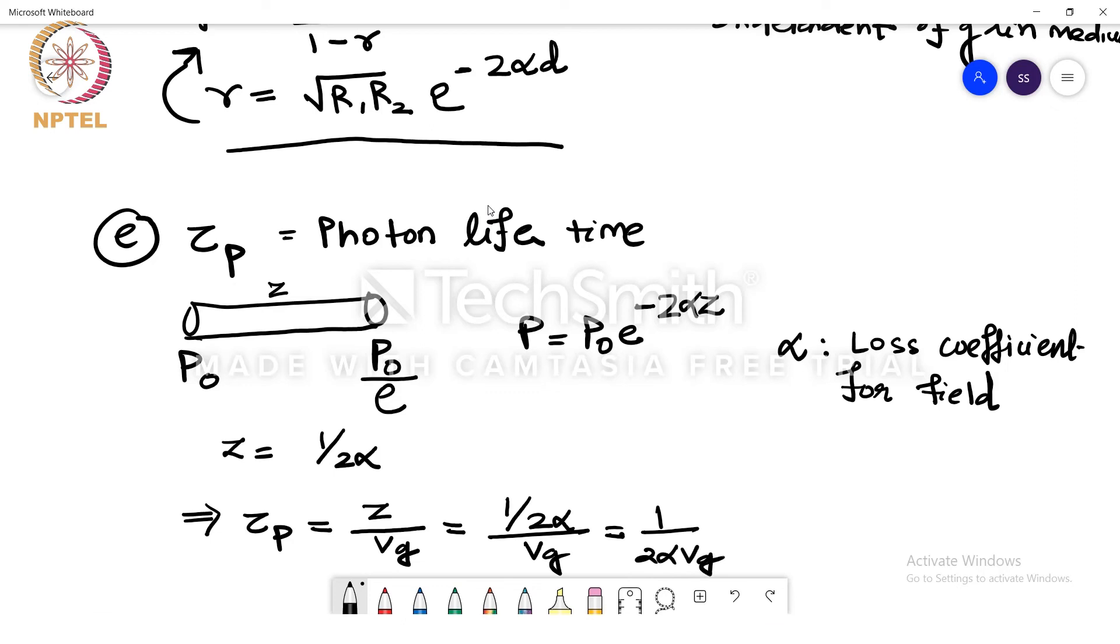So substituting 1 by 2 alpha vg. That means the alpha we know is the combination of alpha cavity plus alpha mirror multiplied with vg with a factor of 2 that will give us the photon lifetime.